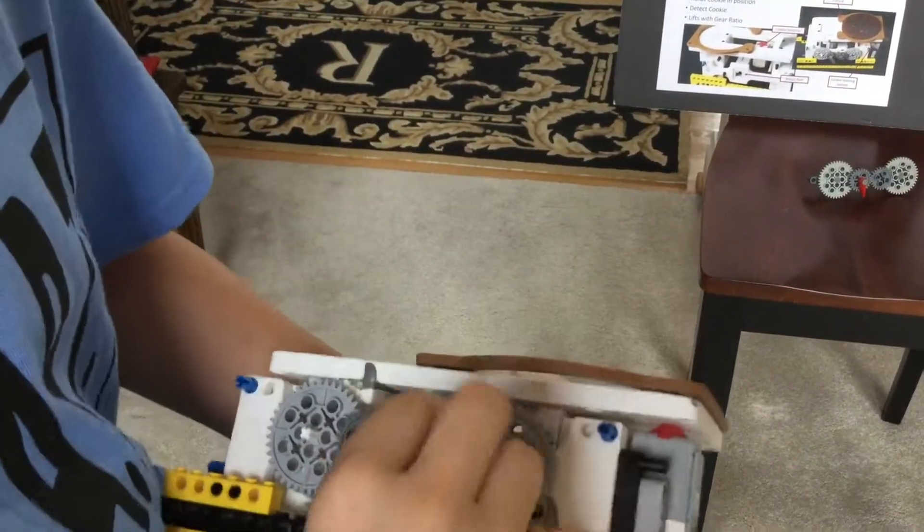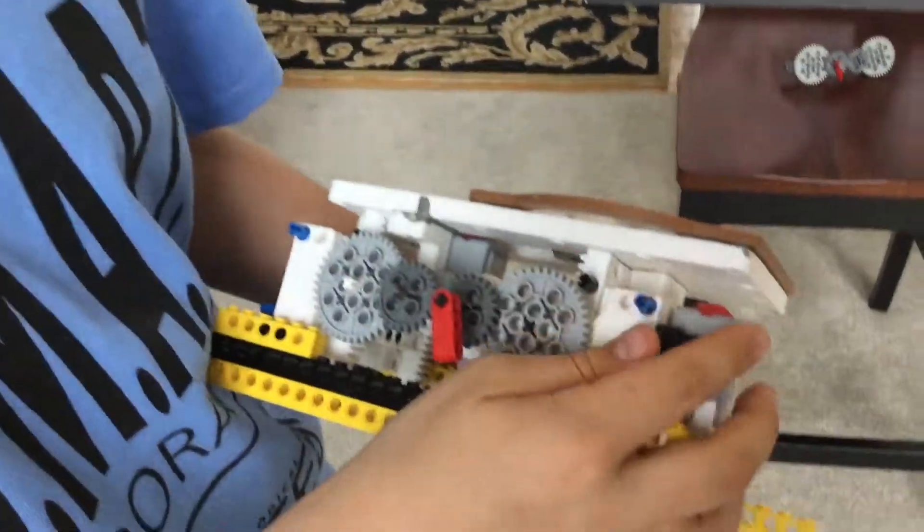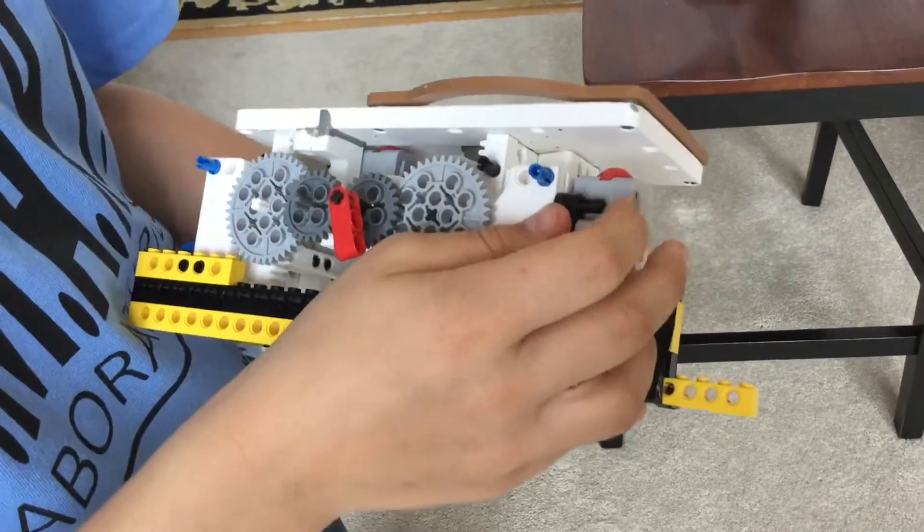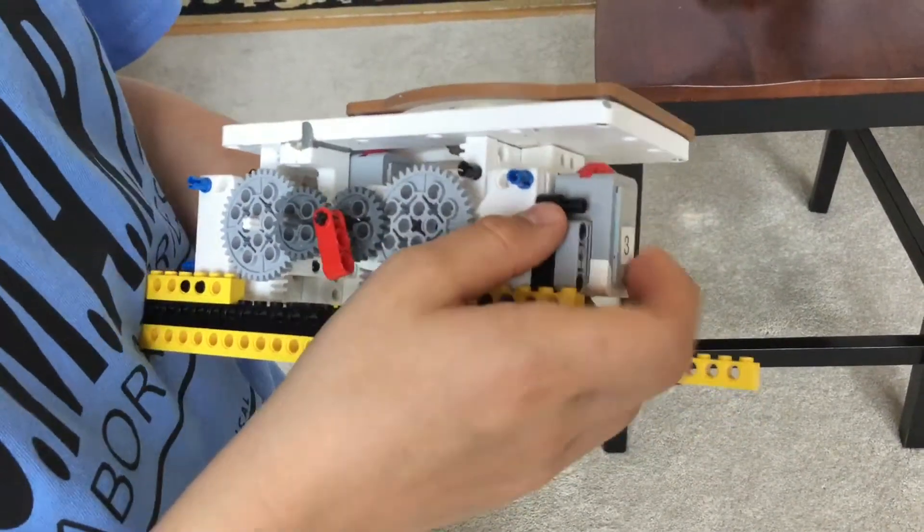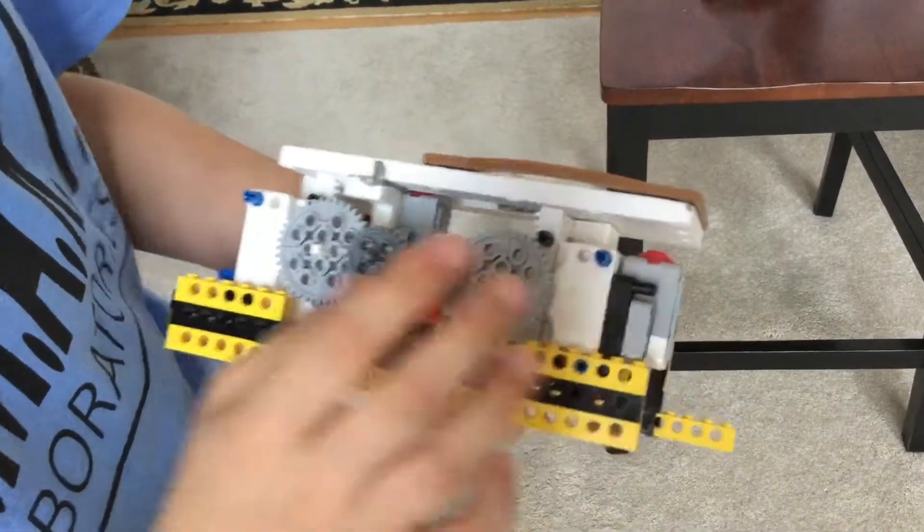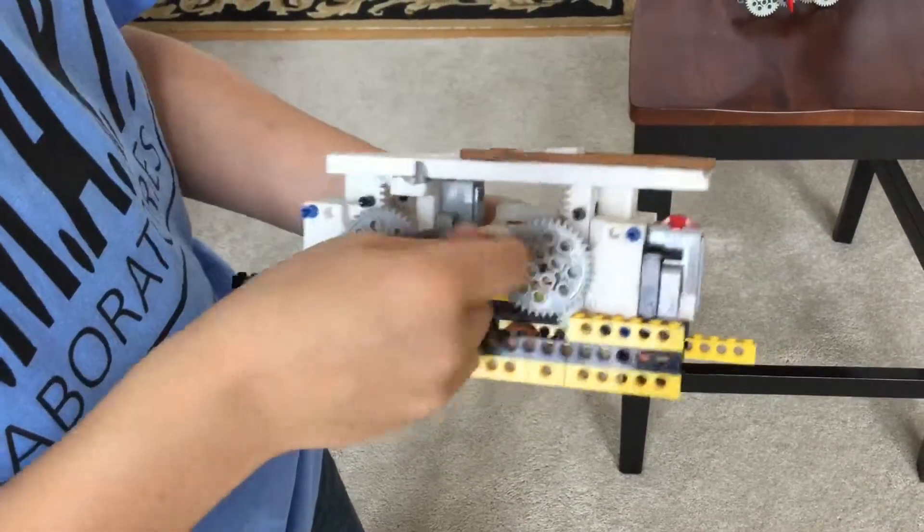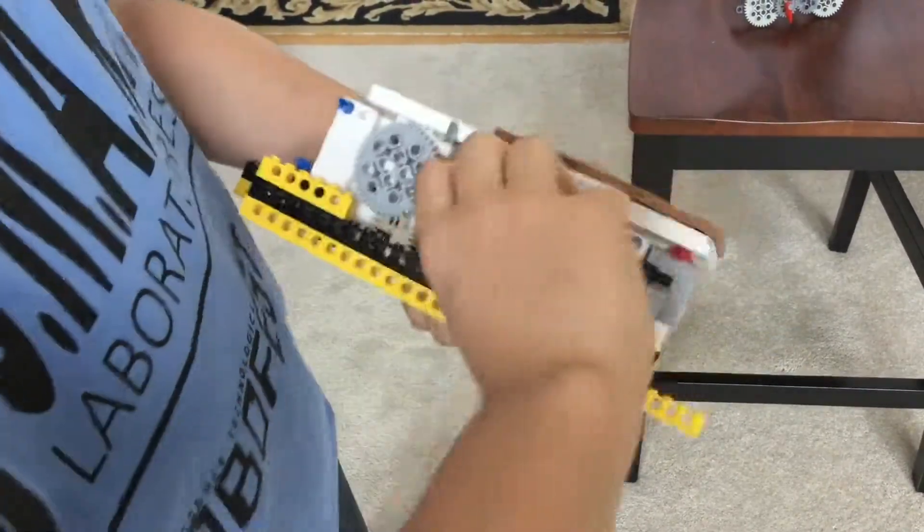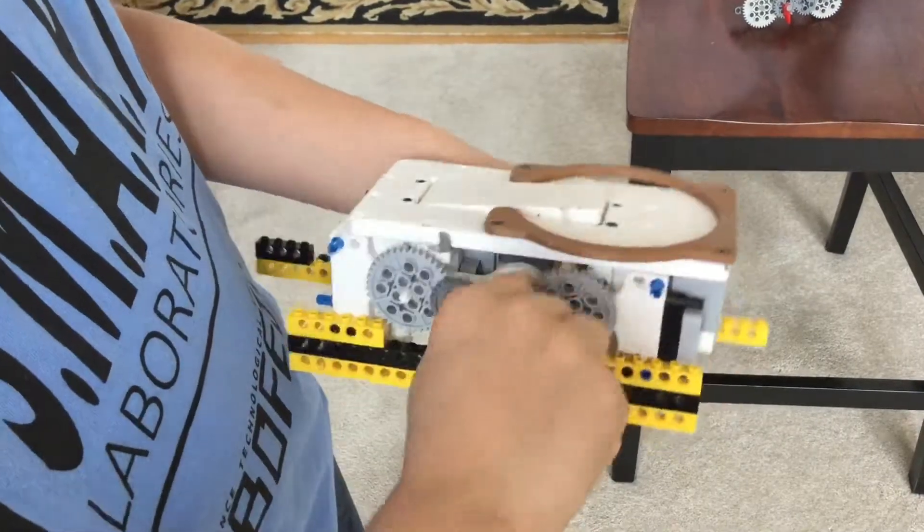This sensor right here was originally used for homing, but there wasn't enough space to connect it to the EV3 brick because we needed other sensors. So now we just home by turning the motors all the way down until they can't go down anymore.